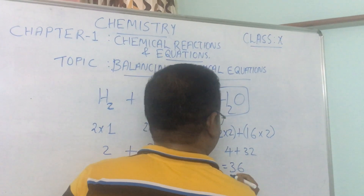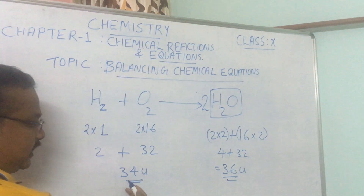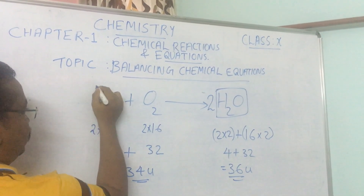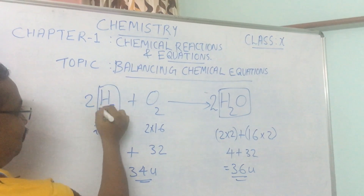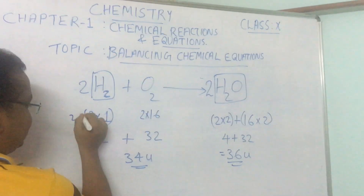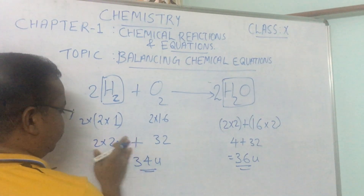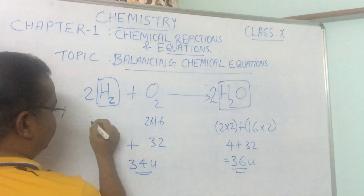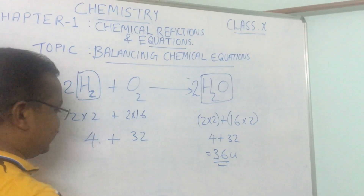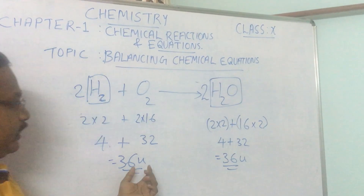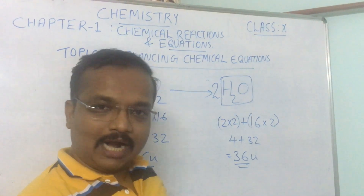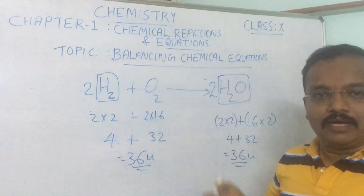By putting coefficient 2 before H₂O, oxygen doubles: 16 × 2 = 32, giving 36u on the right. But the left was 34u, so there is still a problem. Now we put coefficient 2 before H₂ as well, so hydrogen becomes 2 × 2 = 4 atoms: 4 × 1 = 4, plus 32 gives 36u on the left. Now left hand side is 36u and right hand side is also 36u — the equation is balanced.